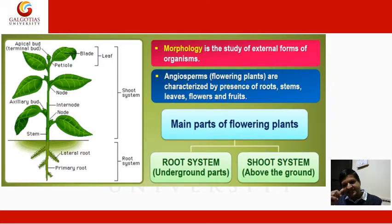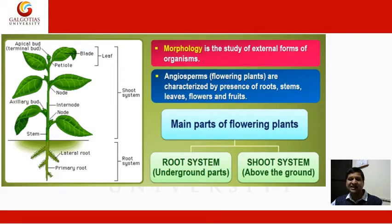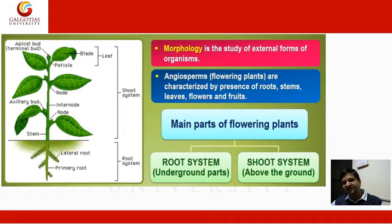Morphology is the study of external form of an organism. Angiosperms — especially those known as flowering plants — are characterized by the presence of roots, stems, leaves, flowers, and fruits. The main parts of flowering plants are: first, the root system; and second, the shoot system.